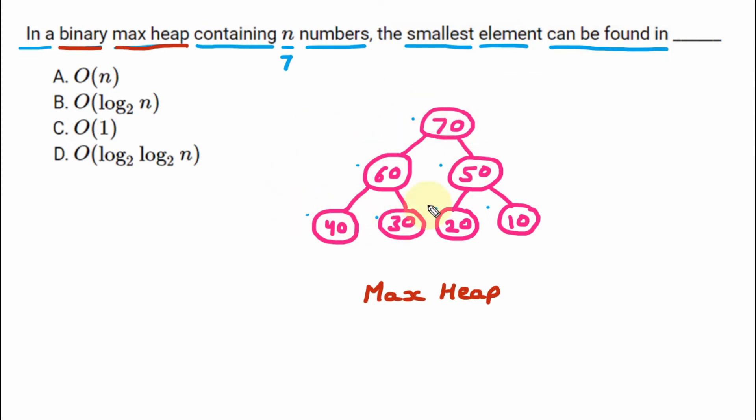So here we want to check that if I want to find smallest, we know that here 10 is the smallest element. So how we can find the 10 in what complexity? So there are various complexities given. The first one is big O of n, then big O of log base 2 n, big O of 1, big O of log base 2 log base 2 n.